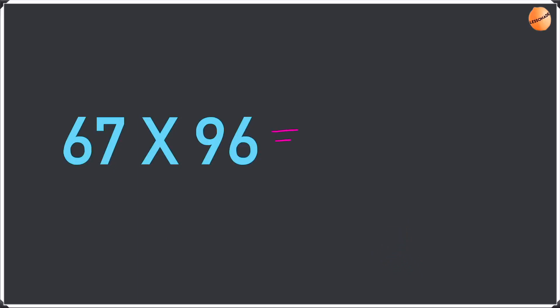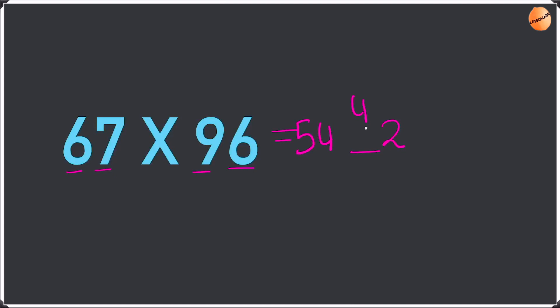Now we're going to do this next question a bit faster. Last digit: 7 times 6 is 42 — write the 2, then write the dash. First digit: 9 times 6 is 54 — write the 5 and the 4. Now multiply the numbers like this: 7 times 9 plus 6 times 6, that is 63 plus 36 which is 99. Write the 9 and take the 9 as a remainder.